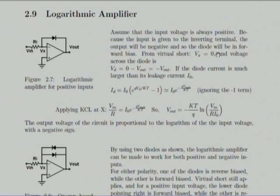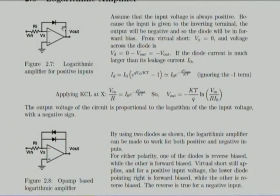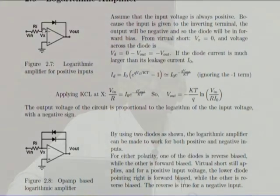A student asks: since Vx is equal to ground due to virtual grounding, why not simply connect Vx directly to ground? The answer is no — if you actually make it ground, there is no current through the diode because the input just goes into ground. The virtual ground exists because the output changes in such a ratio that the voltage divider formed by Rf and Ri results in this node being 0.